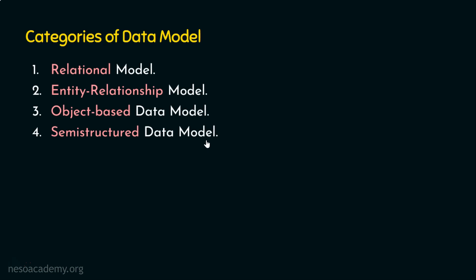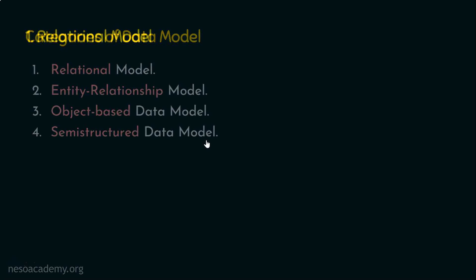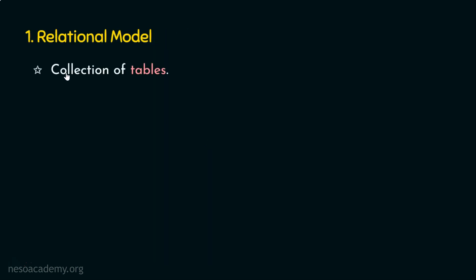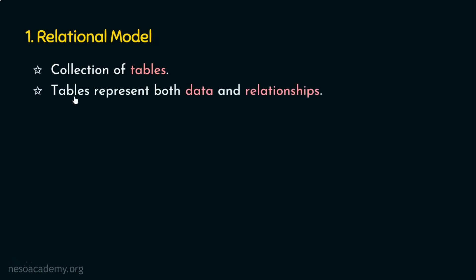Let's start with the first data model, the relational model. Basically, a database is a collection of tables, and these tables are going to store the data and establish or maintain the relationship among the tables. We are going to store the data in databases where databases are collections of tables, and these tables store the data in the form of rows and columns.